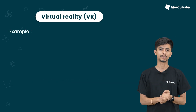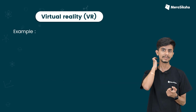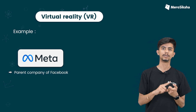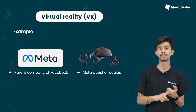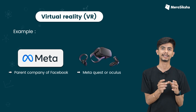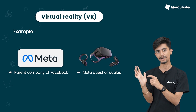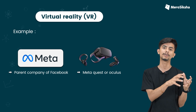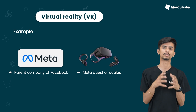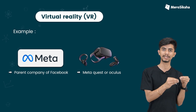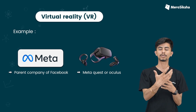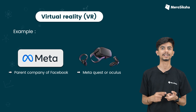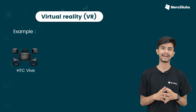Here is a VR example. One interesting VR company is Meta, the Facebook parent company. Meta owns Oculus, and their headset is called the Quest. The Oculus logo represents VR. Meta is one of the world's biggest VR companies. Another company is called SDC, also known as VIBE.